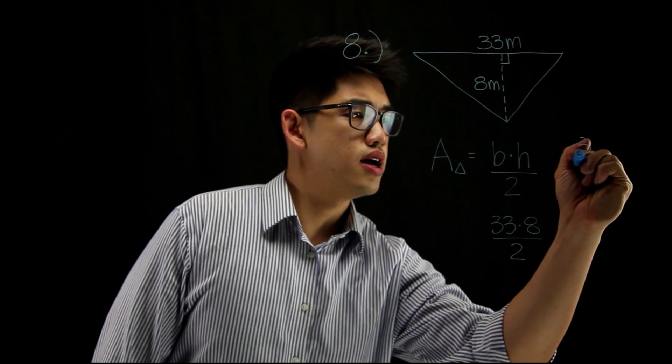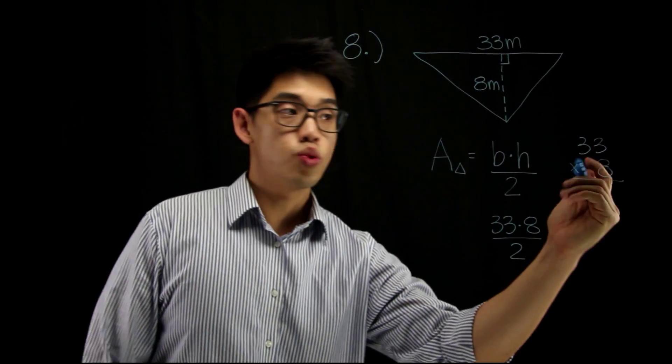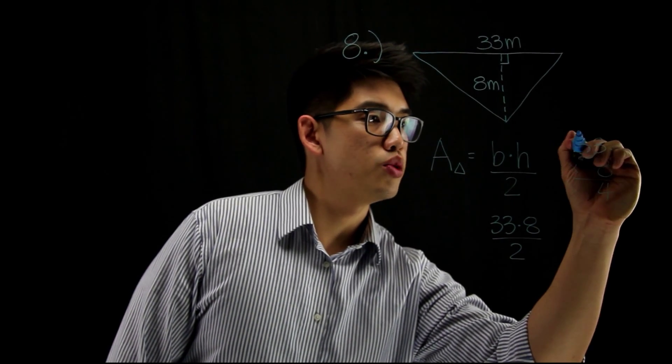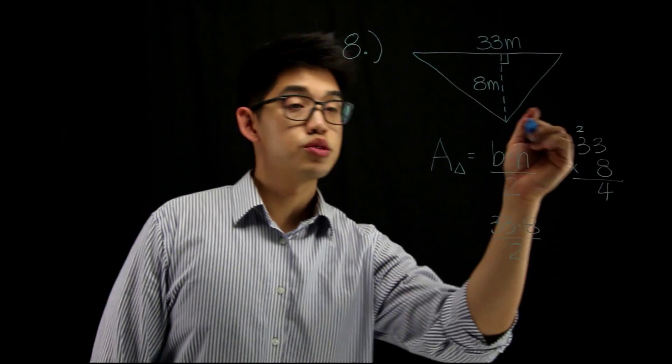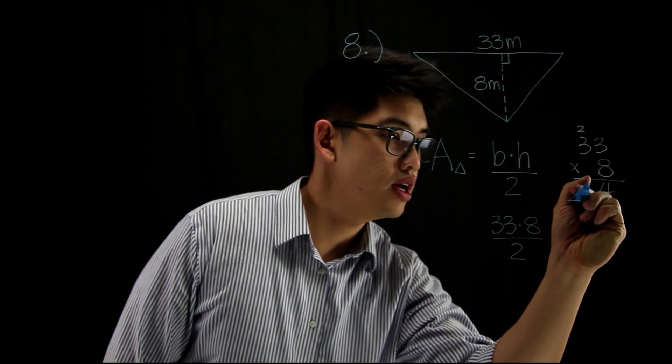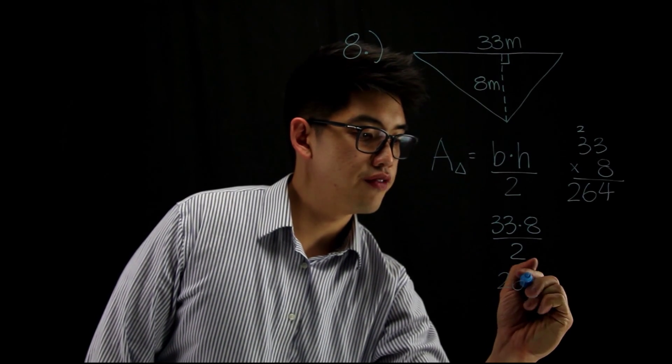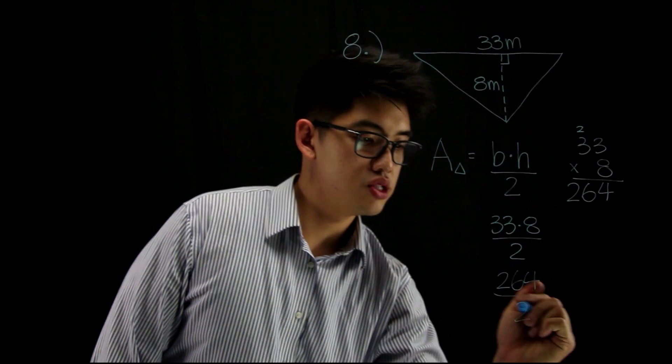33 times 8, let me do that on the side here. 33 times 8. 8 times 3, that's 24. Put the 2 on top. 8 times 3, that's 24 again. Plus 2, 24 plus 2 is 26. Okay. My answer is 264. So, that's going to equal to 264. And then we're going to divide that by 2.